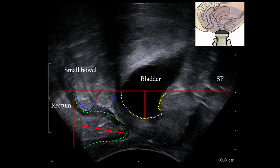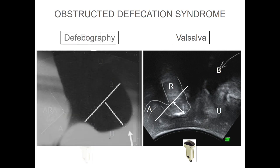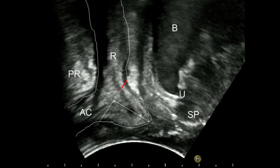Bladder — cystocele; small bowel — enterocele; and rectocele. All three prolapses in the same female. This patient has outlet obstruction. We ask her to do a Valsalva maneuver and we see a bulging of the anterior rectal wall, similar to the same image we can have using proctography. And we can measure the depth of this bulging of the rectal wall.